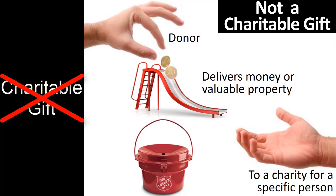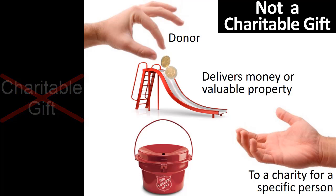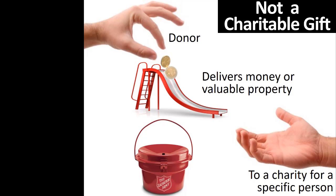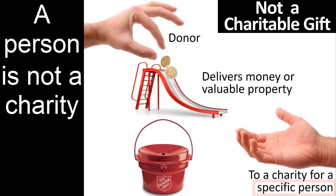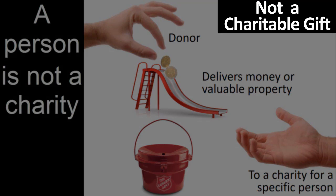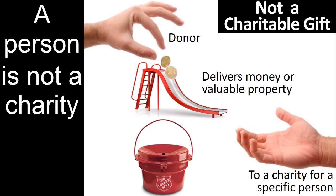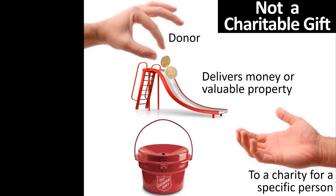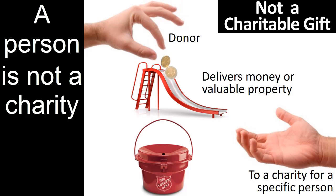The last example of a transfer that is not a deductible gift is when a donor delivers money or valuable property to a charity for delivery to a specific person. A person is not a charity. Any person, even a person in serious financial or medical need, is not a charity. Giving money to a specific person is not a charitable gift for tax purposes. This fundamental rule cannot be avoided by simply giving money to a charity with the requirement that the money must then be delivered to a specific person. Such a transfer is treated as if it were a direct transfer to the person, and since a person is not a charity, the transfer is not a deductible charitable gift.